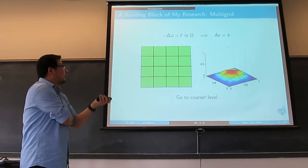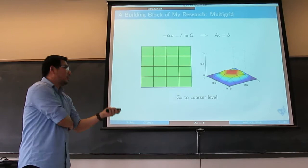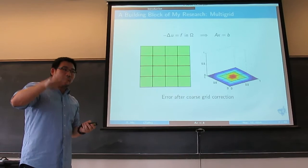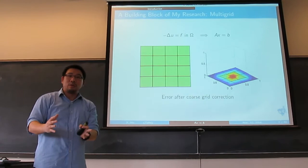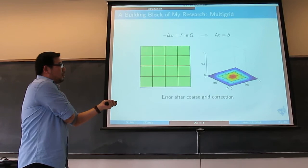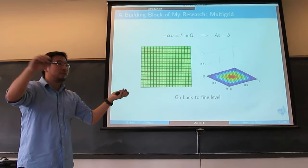Now I can go to an even coarser grid. This one only has nine points as degrees of freedom — a nine-by-nine system. I can solve it by direct method since it's smooth enough. This is called coarse grid correction. We go to the coarsest level, solve it exactly using direct method — it's cheap because the coarse grid is very small. After the coarse correction, the magnitude of the error is essentially zero. You bring it back to the fine grid and the error is basically flattened out.